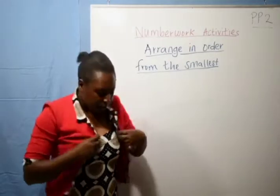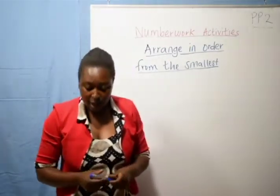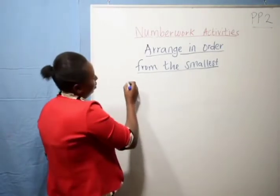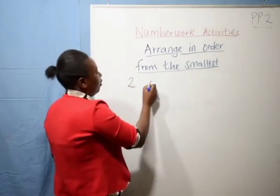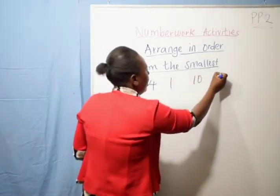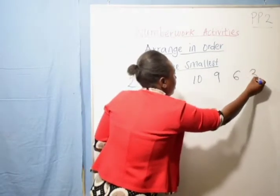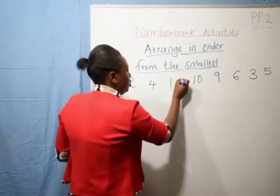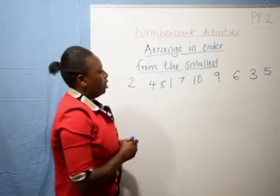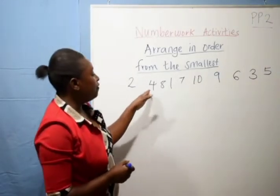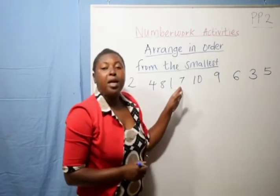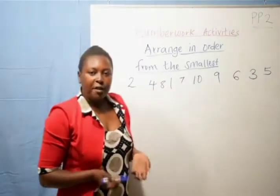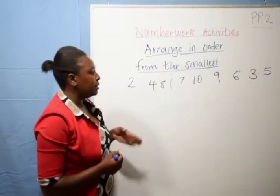Very nice — this is how we count these numbers, isn't it? So I want us to arrange numbers in order. Let us start with: two, four, one, ten, nine, six, three, five. We also have number two, four, eight, one, seven, ten, nine, six, three, and five respectively.